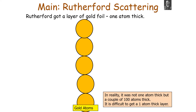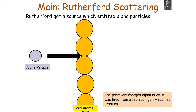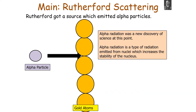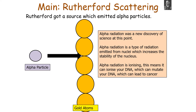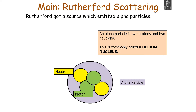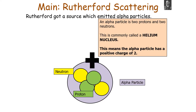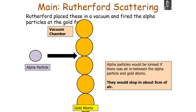Rutherford got a layer of gold foil approximately one atom thick — in reality a couple of hundred atoms thick, as a single atom layer is very difficult to achieve. He used a source which emitted alpha particles: the positively charged alpha nucleus was fired from a radiation gun such as uranium. Alpha radiation is a type of radiation emitted from the nucleus, and the alpha particle is made of two protons and two neutrons — commonly called the helium nucleus — giving it an overall positive charge. Rutherford placed the gold foil and the alpha particle source in a vacuum and fired the alpha particles at the gold foil.